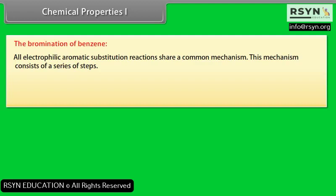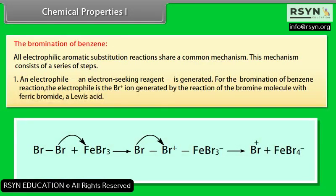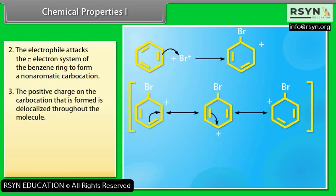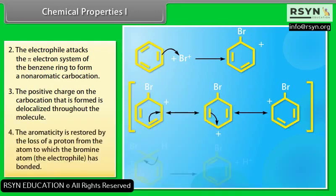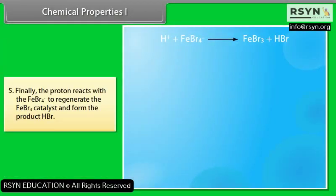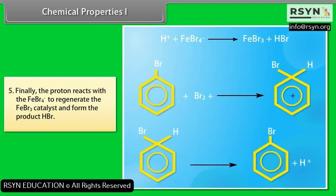This mechanism consists of a series of steps. An electrophile — an electron-seeking reagent — is generated. For the bromination of benzene, the electrophile is the Br⁺ ion generated by the reaction of the bromine molecule with ferric bromide (FeBr₃), a Lewis acid. The electrophile attacks the pi electron system of the benzene ring to form a non-aromatic carbocation. The positive charge on the carbocation is delocalized throughout the molecule. Aromaticity is restored by the loss of a proton from the carbon to which the bromine atom bonded. Finally, the proton reacts with FeBr₄⁻ to regenerate the FeBr₃ catalyst and form the product HBr.